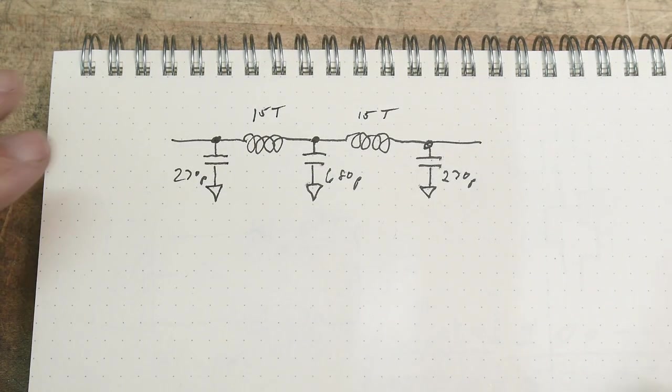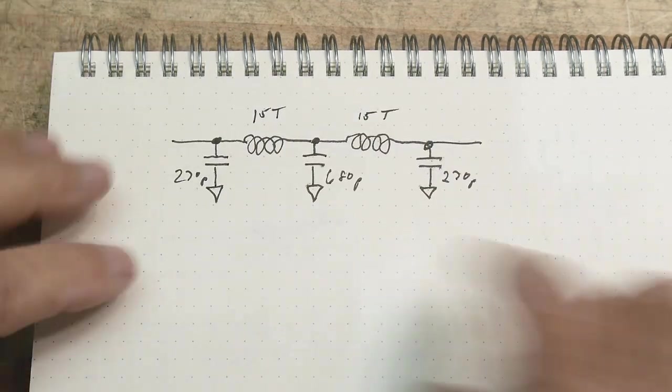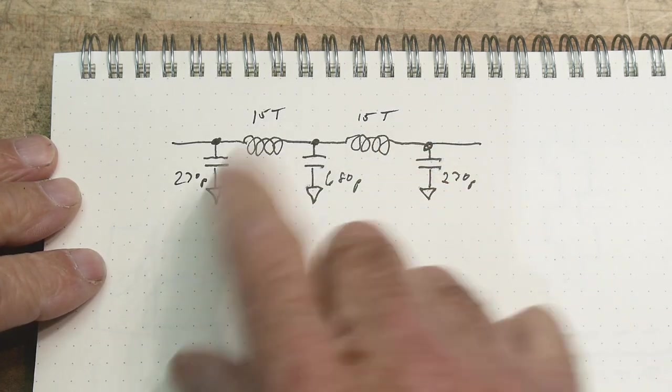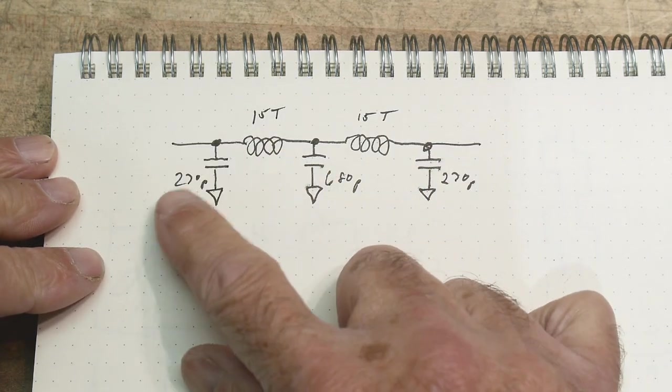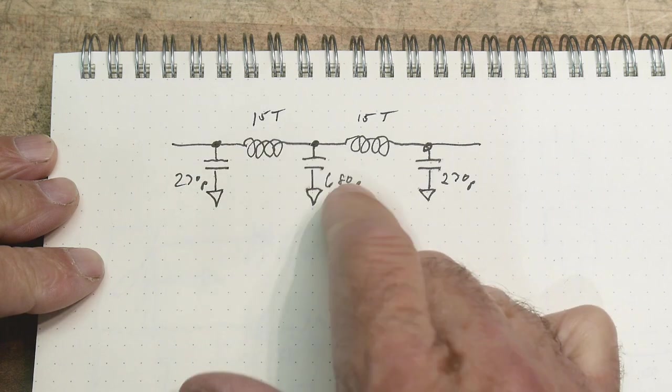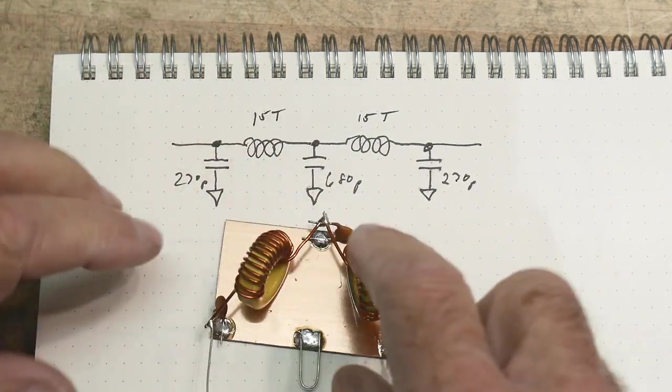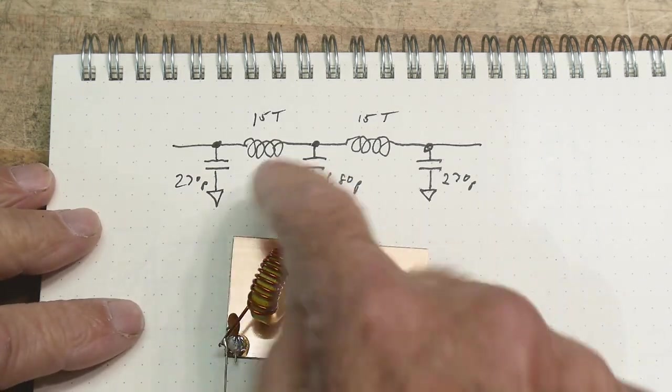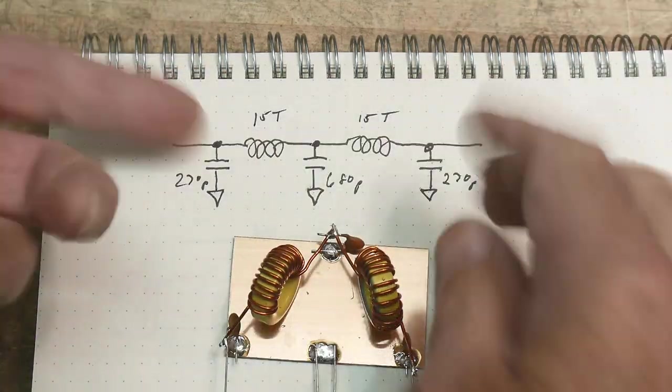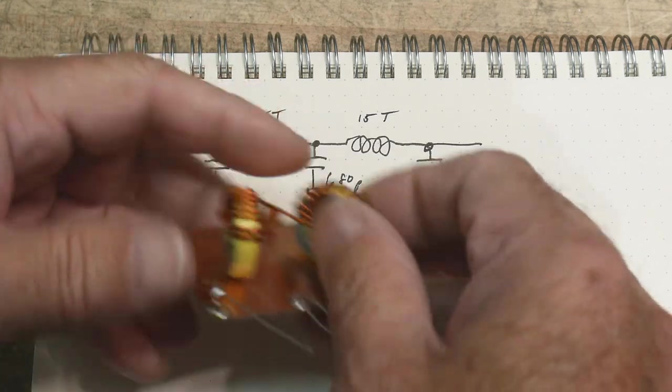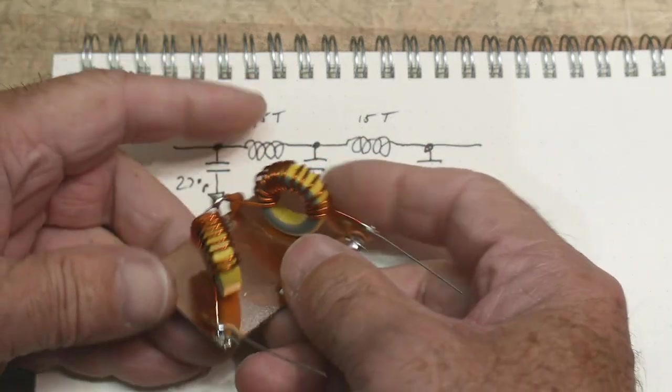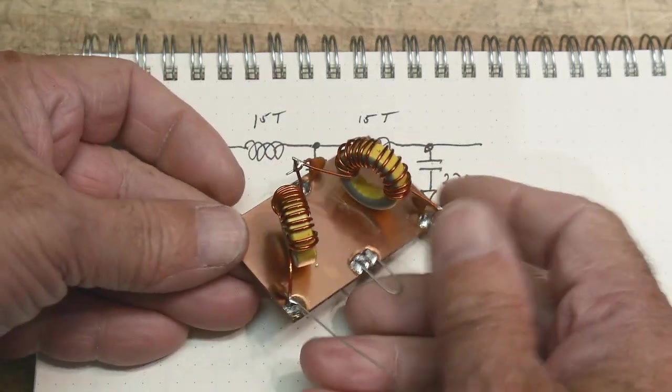All right, I'm continuing to have fun with these filters, and I'm going to do a simple filter here. This is just a two-section one. It's going to be 270 pF, 680 pF, 270 pF, and then I've got two inductors, 15 turns each. I don't care what the correct values are or anything right now. I'm just looking at relative things. And so I built a little filter here.